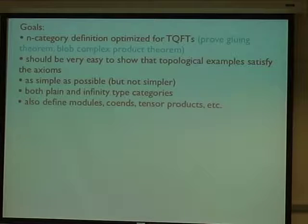You want something that's optimized for work in TQFTs. So you want a definition for which it's convenient to prove Bluen theorem, and it's a lot of complex product theorems that I'll mention. You don't want to have too many axioms to check. If you've got some kind of example of topological origin, it should be pretty easy to show that it satisfies the axioms.